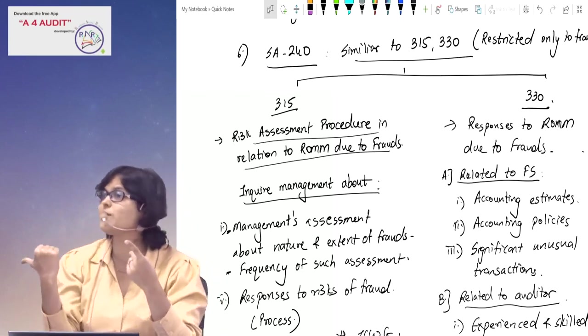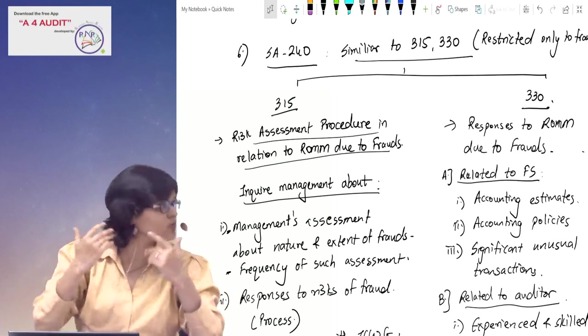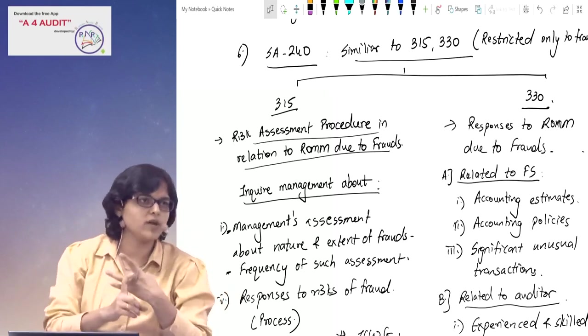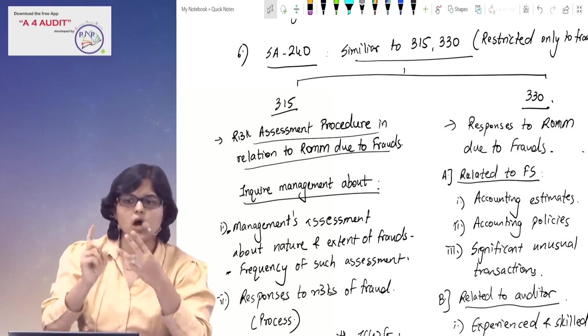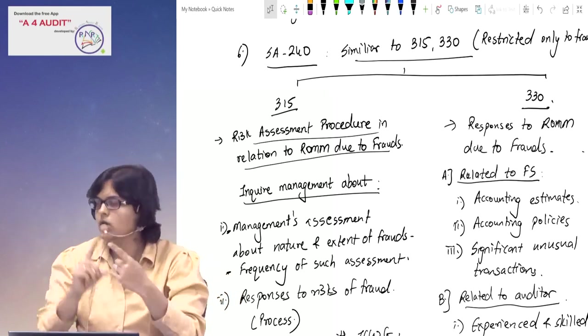What to inquire? Management - how is your assessment? Assessment about what? Nature of fraud, extent of fraud, and frequency of the assessment. Second point: how do you respond? Third point: how do you communicate it to TCWG and how do you communicate to employees?